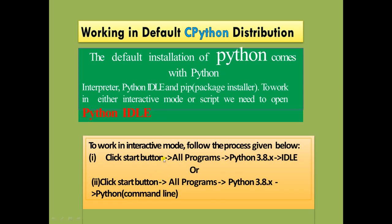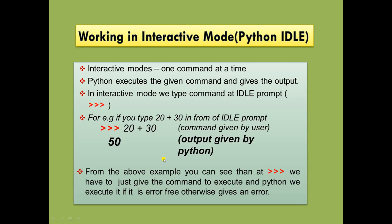In interactive mode, one command executes at a time. Python executes the given command and gives the output immediately. You type commands at the IDLE prompt (>>>). For example, if you type 20 + 30, it will give you 50. The three angle brackets (>>>) are the prompt; you give the command and Python executes it if it is error-free, otherwise it shows an error.